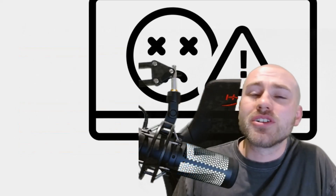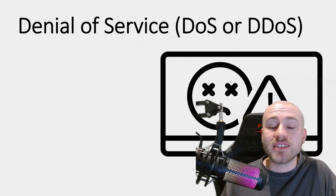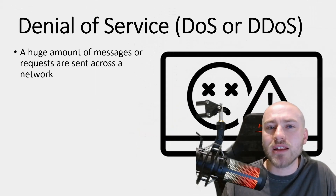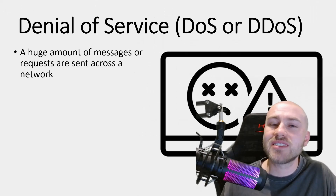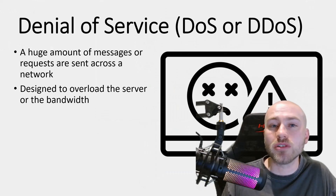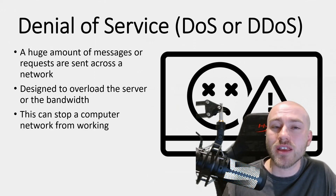Now we're looking at online threats — specifically network threats. A common one is a denial of service attack, or DoS, often referred to as a DDoS. When you use a network, you're sending packets of information. A DDoS attack sends a huge volume of packets to a destination, and the sheer amount of information overloads the server or bandwidth, which can stop a computer network from working.